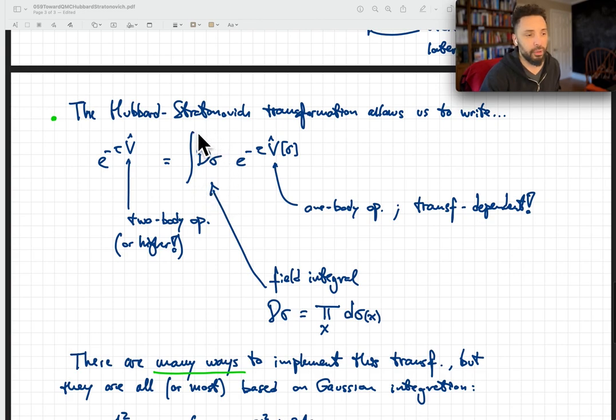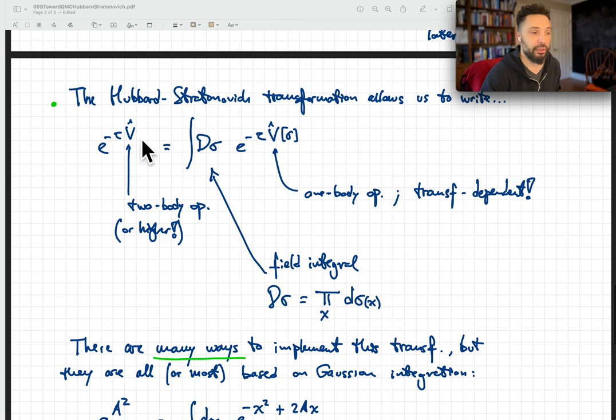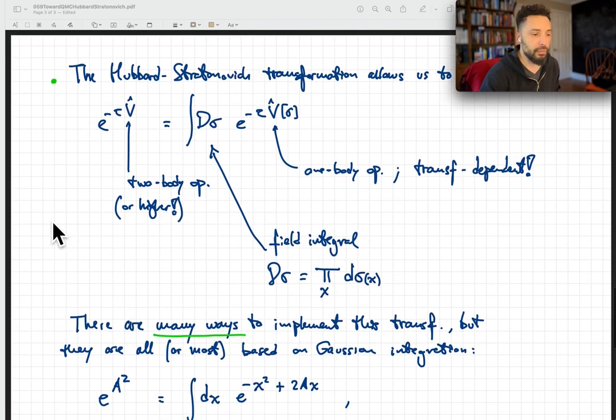Let me say a few things about this integral here. This is a field integral. This big D that we put here, D sigma, is actually a product of all points in space of d sigma. We have a variable we're integrating over at each point in space. Because we're inserting here e to minus tau V at every point in imaginary time, we'll have such an integral at every point in space-time.